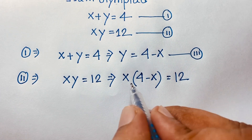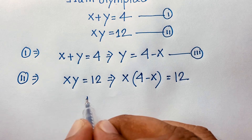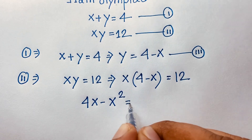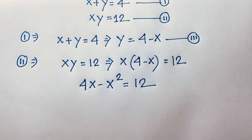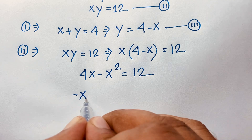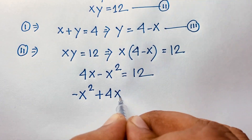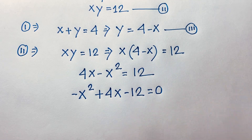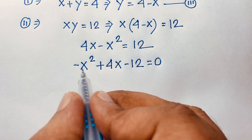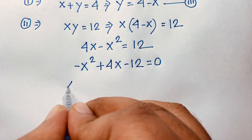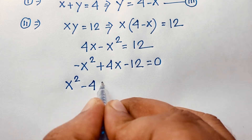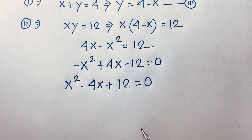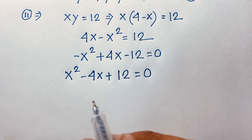Expanding: 4x minus x squared is equal to 12. This gives us a quadratic equation. Rearranging: negative x squared plus 4x minus 12 equals zero. Multiplying both sides by negative 1: x squared minus 4x plus 12 is equal to zero.